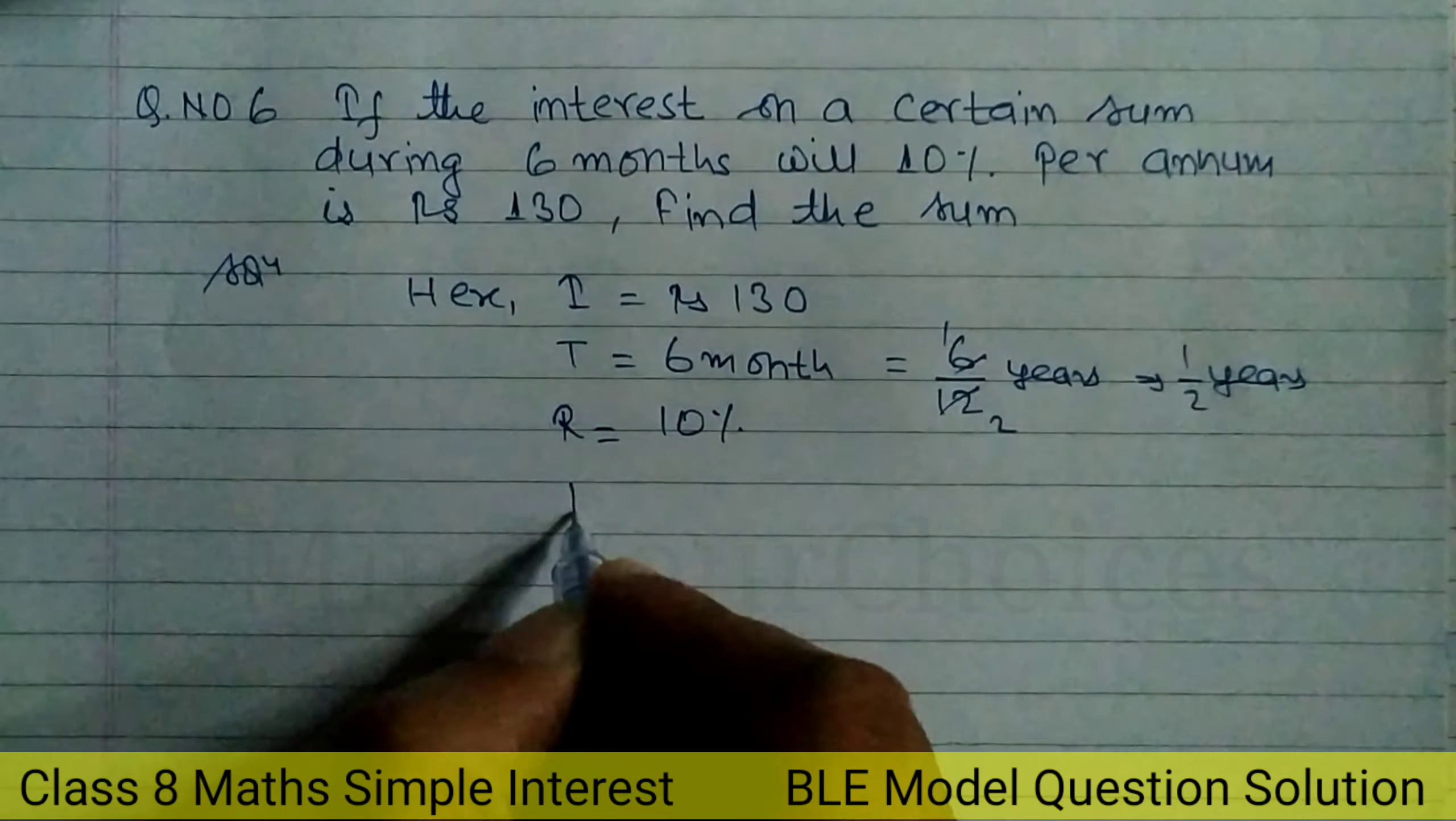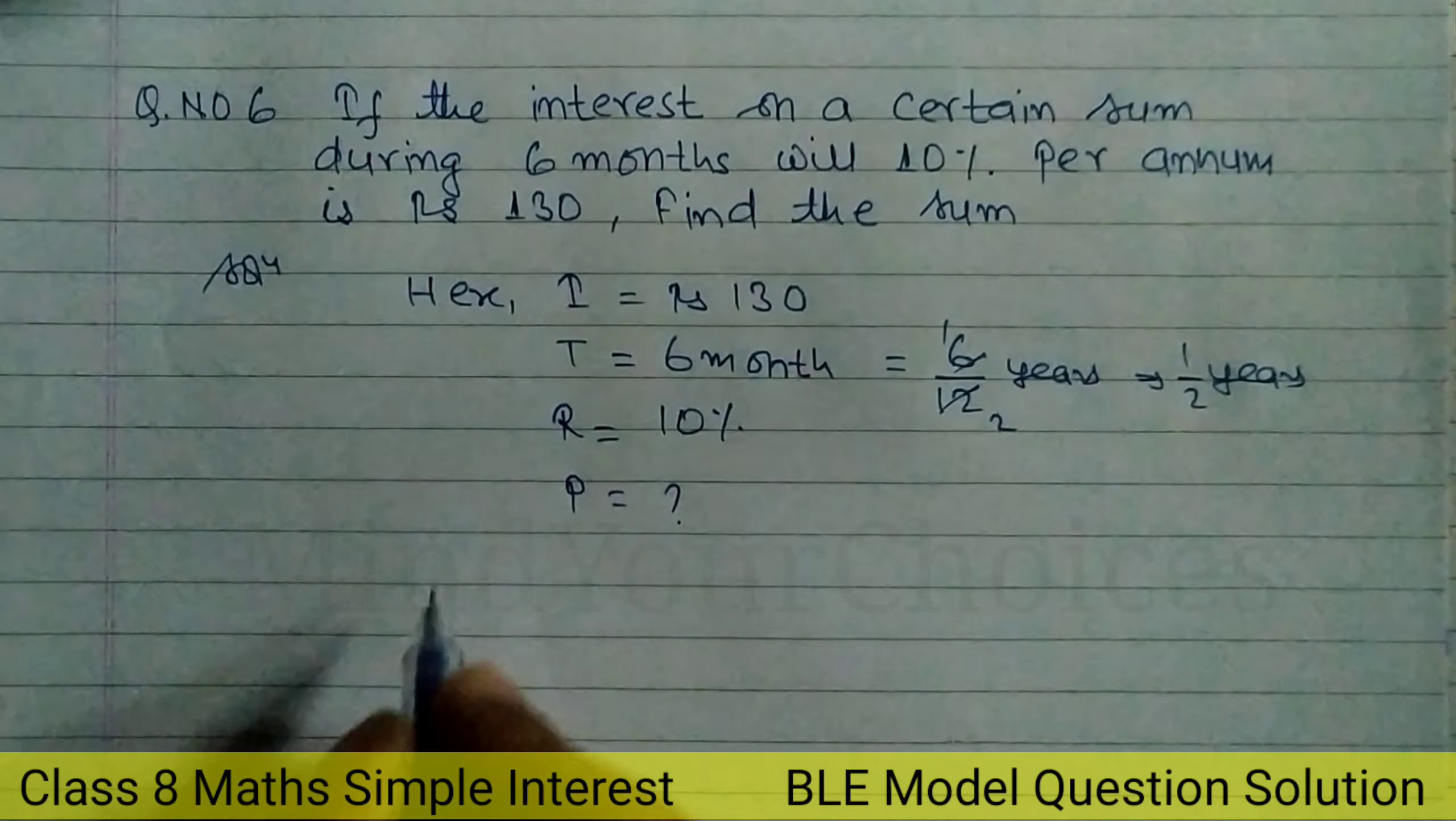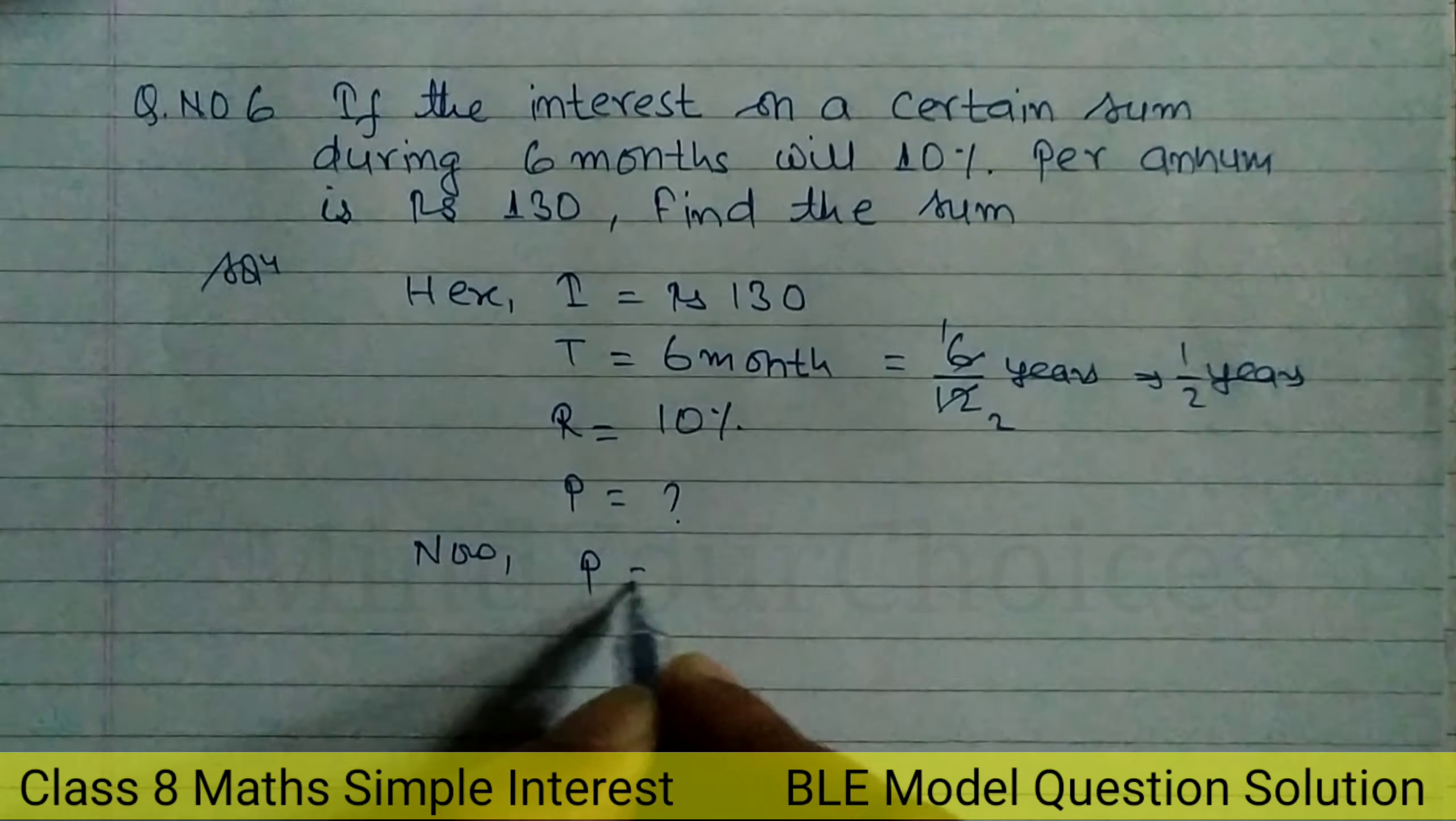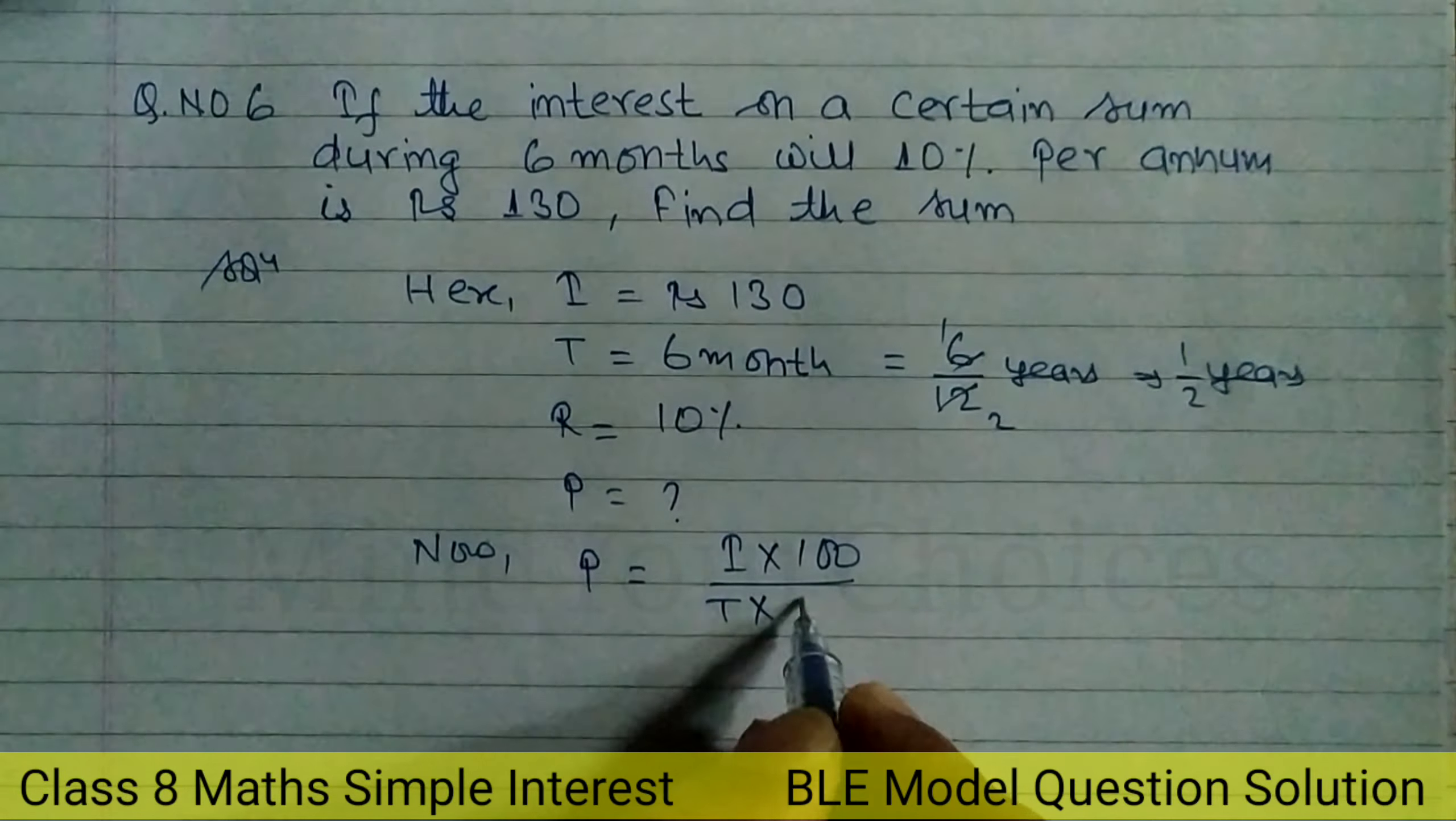P is equal to what? Principal is equal to what? Now we use the principal formula: P equals I into 100 divided by T into R.